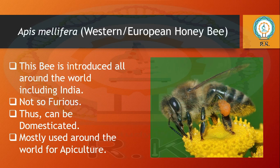Apis mellifera is the western or European honey bee. This bee has been introduced all around the world, including India. It is not so furious, can easily be domesticated, and is mostly used around the world for apiculture purposes. So the four species studied are: Apis dorsata, Apis serrana indica, Apis florea, and Apis mellifera.